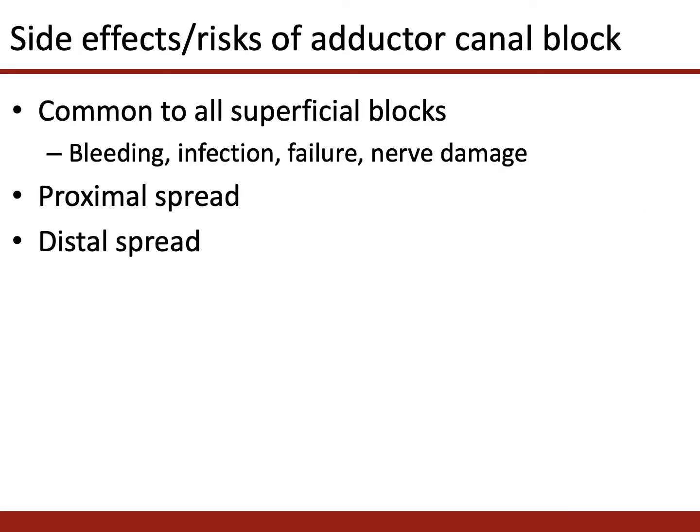In terms of side effects and risks, the adductor canal block shares all common side effects of nerve blocks: bleeding, infection, failure, and nerve damage. The specific risks come from local anaesthetic spreading proximally or distally. If it spreads proximally, it can block the femoral nerve proper, causing quadriceps motor blockade. If it spreads distally, it can pass through the adductor hiatus and block the sciatic nerve — this is incredibly rare but has been reported.